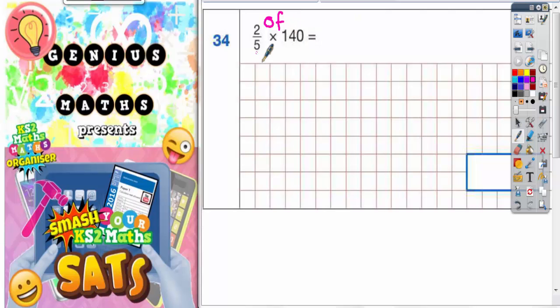And you can't find two-fifths until you've found one-fifth. Now remember, a half means divided by two, a third means divided by three, a quarter means divided by four.